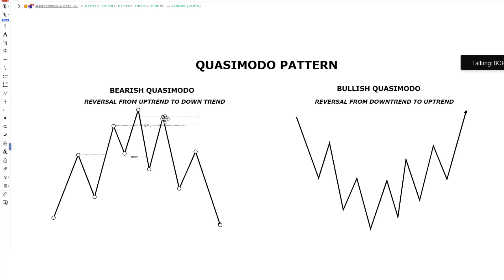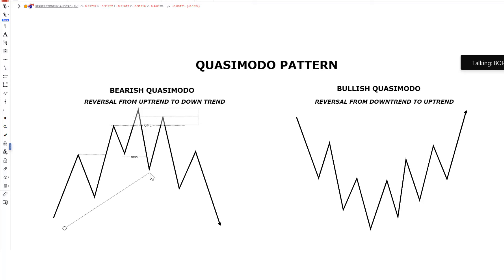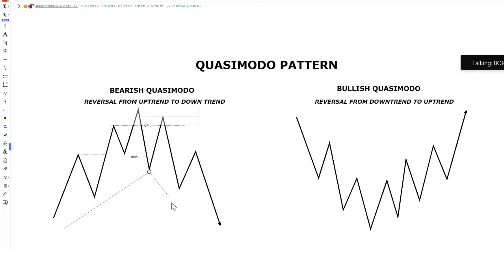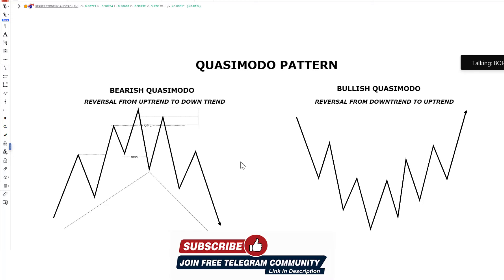After that, you see price retests the level — we have a shifting structure and now price is reversing to the opposite direction. This is simply a reversal from an uptrend: price was trending up and at this point we had that reversal, from uptrend to a downtrend. And this is simply the QML pattern.